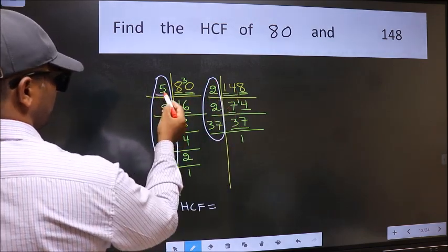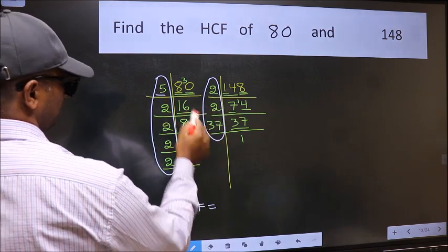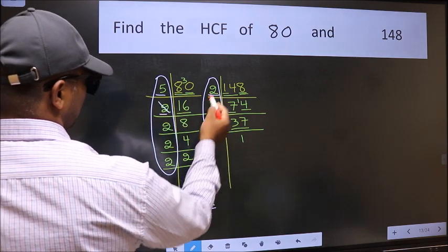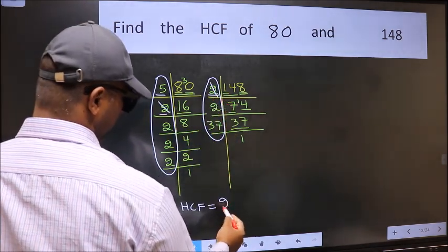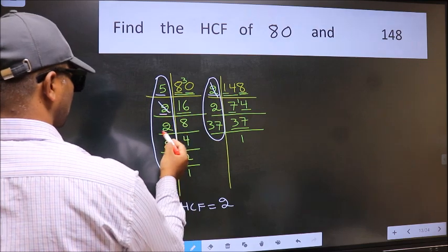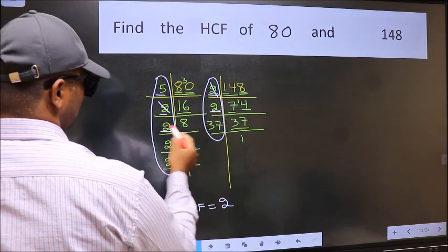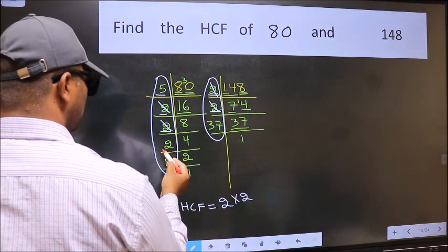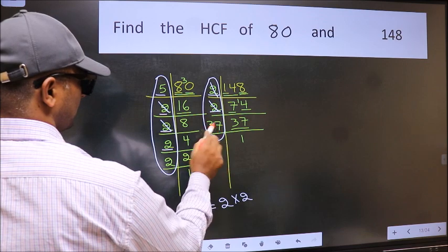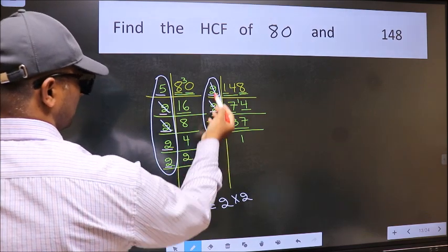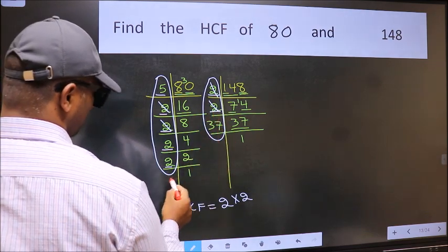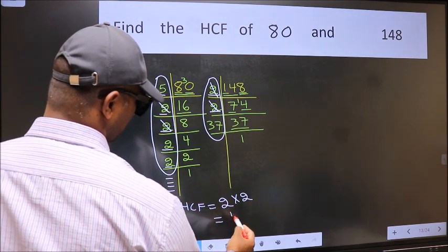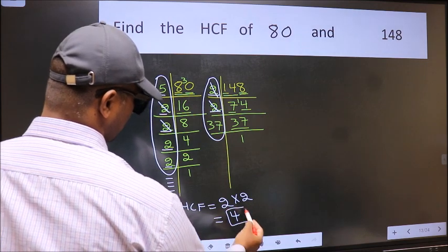Now let us find the numbers which should be present here and here. Starting with the number 5. Do we have 5 here? No. Next number 2. Do we have 2 here? Yes. So cut 2 right here. Next number 2. Do we have 2 here? No. Next number 2. Do we have 2 here? No. No more numbers are left out. So our HCF is 2 into 2, 4 is our HCF.